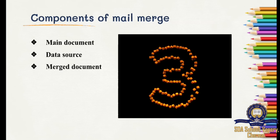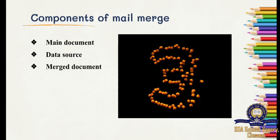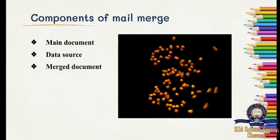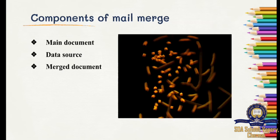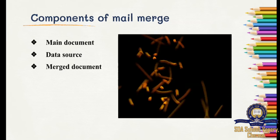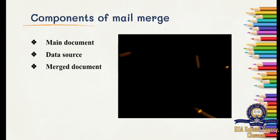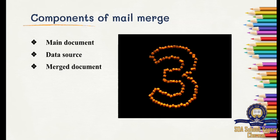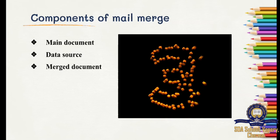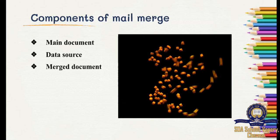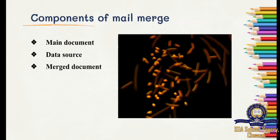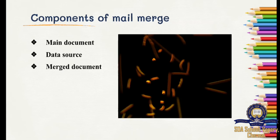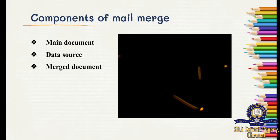Next, we will see the components of Mail Merge — what we need for doing Mail Merge. There are three main components. One is the main document — the letter, invitation, or envelope. Next is the data source — all the names and email IDs of your recipients. Finally, the merged document — that is the final output of what you are doing. So the three main components are: main document, data source, and merged document.